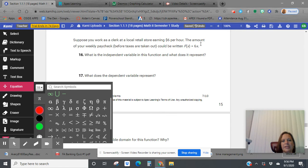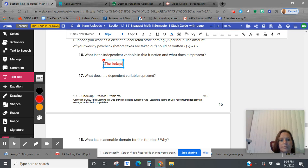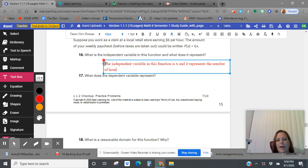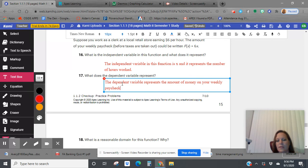Suppose you work as a clerk at a local store earning $6 per hour. The amount of your weekly paycheck before taxes could be written as this. What is the independent variable in this function and what does it represent? The independent variable in this function is x and it represents the number of hours worked. And then what does the dependent variable represent? It represents the amount of money on your weekly paycheck dependent on the hours you worked.